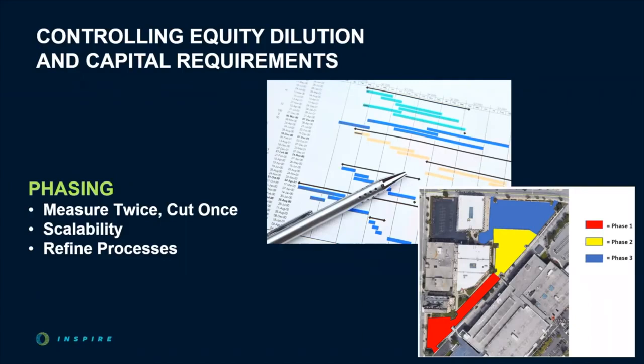You don't know what you don't know at the beginning of the journey, and phasing allows for failure — but not spectacular, business-crippling failure. It could also be called: start smart so you can scale fast.